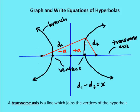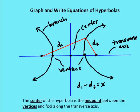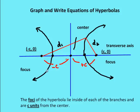With a hyperbola we have two branches. We have a transverse axis, which can be vertical or horizontal. We still have vertices — those are the tips of the branches — and we still have foci. The two foci are going to be inside the branches. The vertices are a units from the center. We can determine the center as the midpoint of the two vertices or the two foci. The foci are c units from the center.